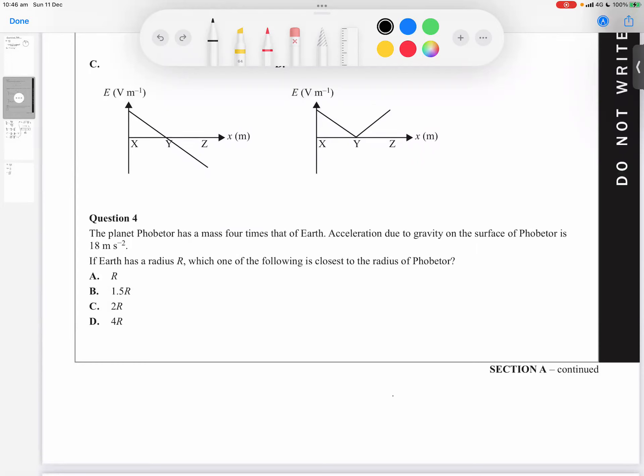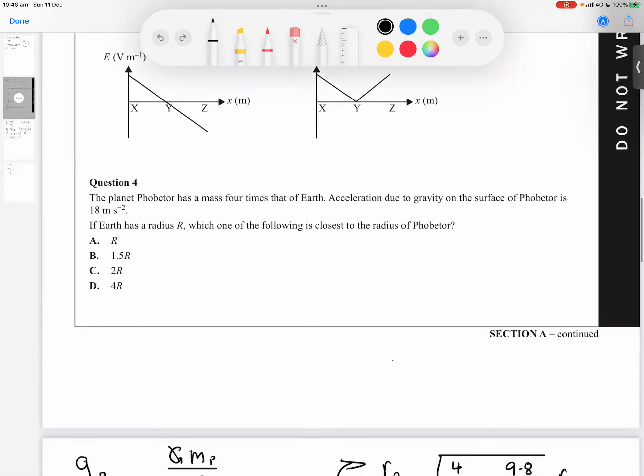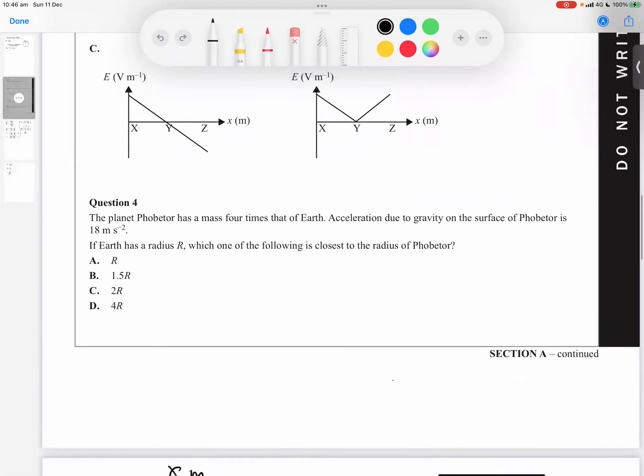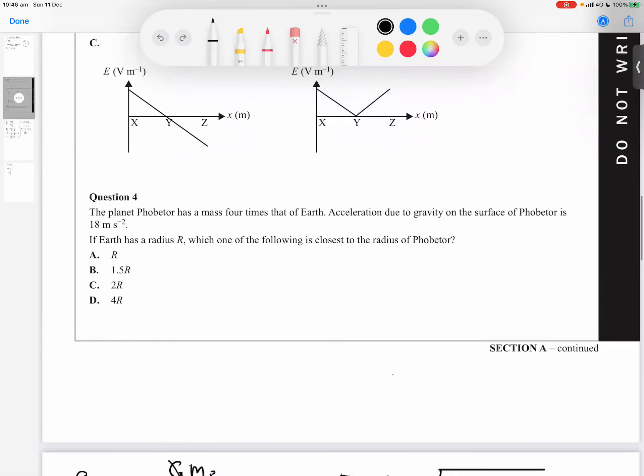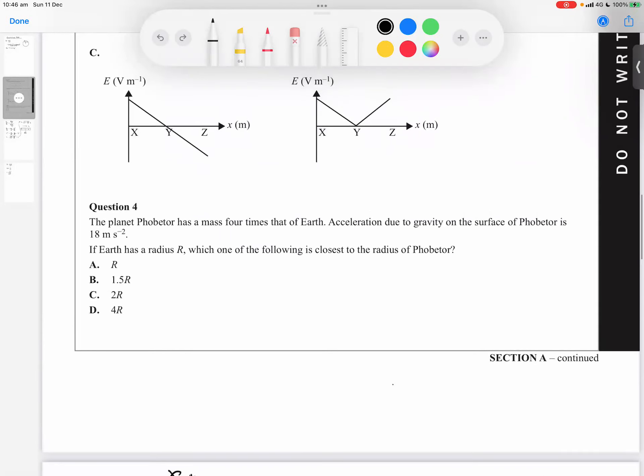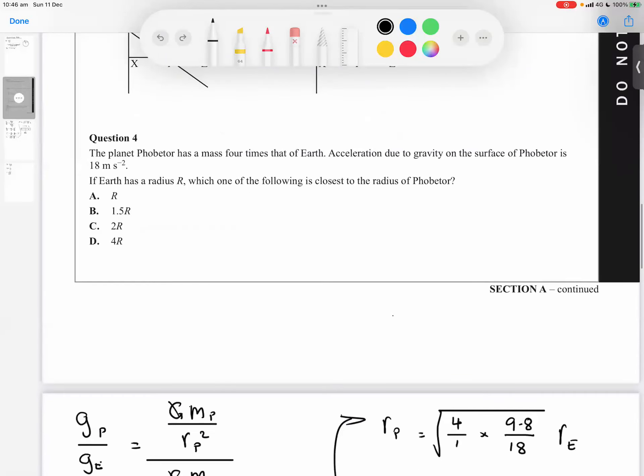The question is saying if earth has a radius of r, which of the following is closest to the radius of Phobitor? This was in section A question four—a bit of a tricky question, especially for question four in section A. There's no guarantee that every single question out of the 20 is straightforward. Not all students got this right—it was under 50 percent, much lower actually. It challenged me a little bit when I first saw it.